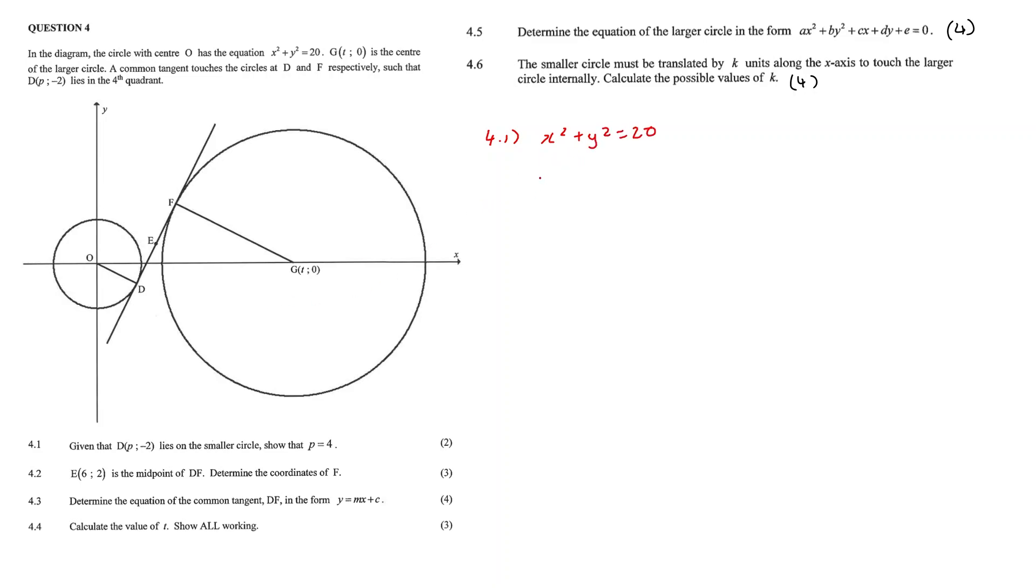We have a y value of negative 2, so we can say x squared plus negative 2 squared is equal to 20. We then get our x squared to be equal to 16. Therefore x is equal to plus minus 4. Now in this case x is p, and we see that D is in the fourth quadrant, making its x value positive. Therefore our p value is 4.